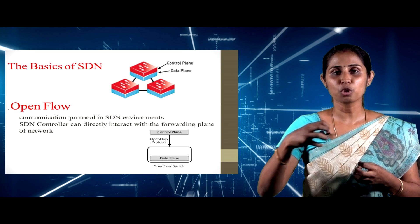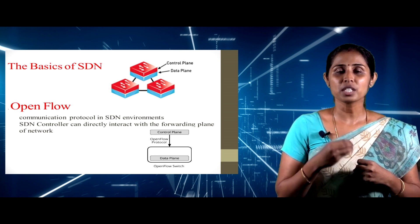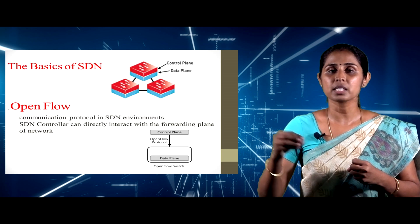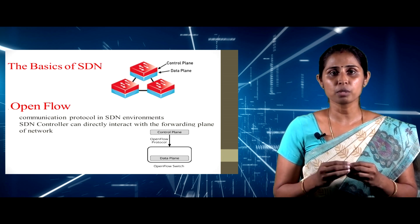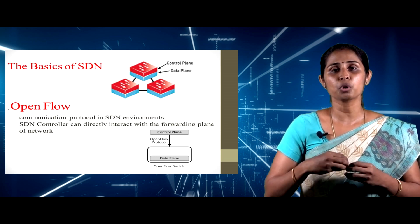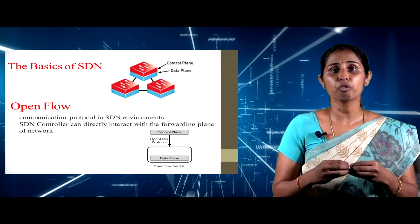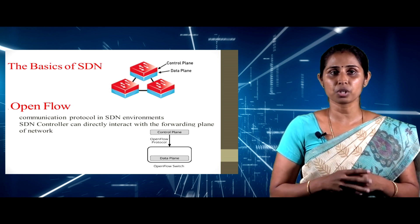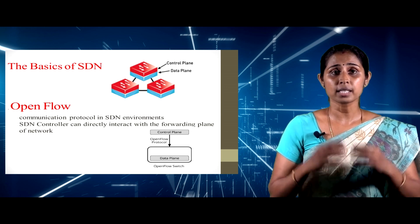SDN provides a separation between the control plane and the data plane functions of a network using a protocol that modifies the forwarding tables in network switches. This separation makes it possible to optimize the network and quickly respond to changes in network usage without the need for manual reconfiguration of existing infrastructure or purchasing new hardware.